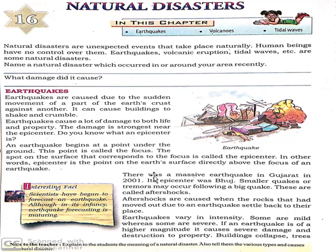There was a massive earthquake in Gujarat in 2001. Its epicenter was Bhuj. So which was the epicenter of the earthquake that occurred in Gujarat in 2001? That was a massive earthquake faced by Gujarat. Smaller quakes or tremors may occur following a big earthquake. These are called aftershocks.